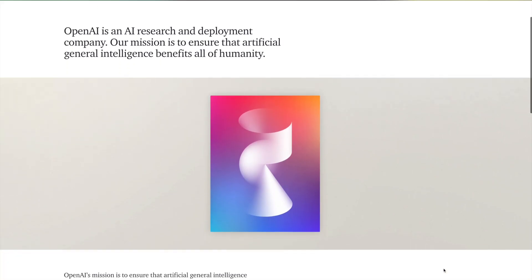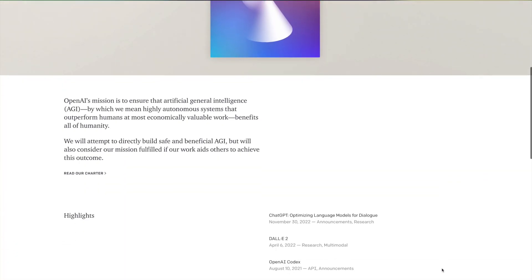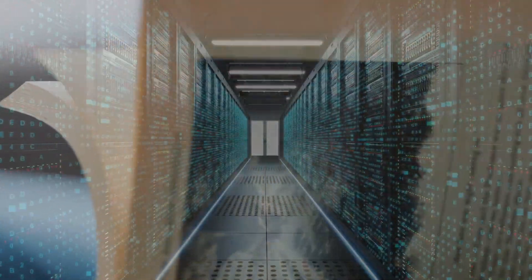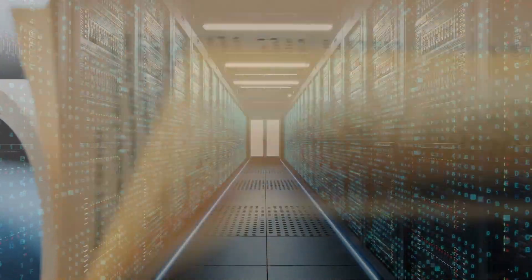ChatGPT was developed by OpenAI and is a language model that has been trained on massive amounts of text data from books and the internet, allowing it to generate human-like responses to a variety of questions and prompts. It's like a machine that has read and learned a lot so it can write its own replies and stories.